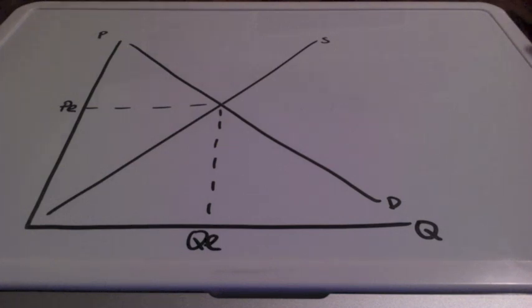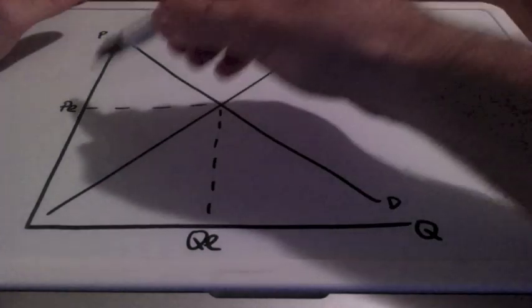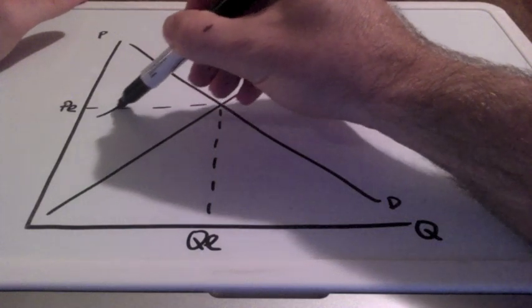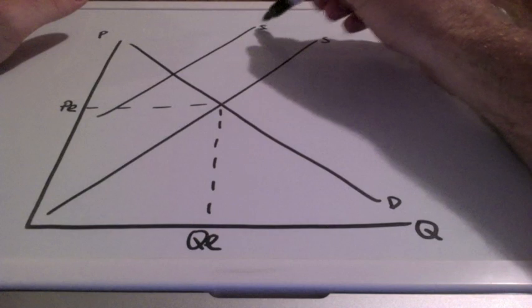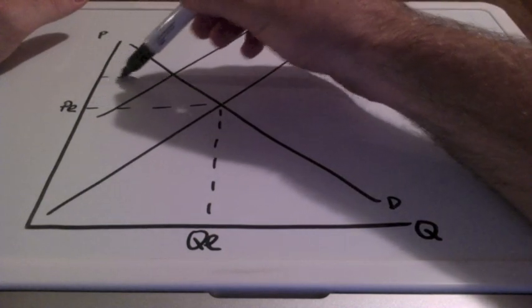How does a tax imposed by the government impact consumer and producer surplus? Well, when we see a tax, we know that it results in a leftward shift in supply.